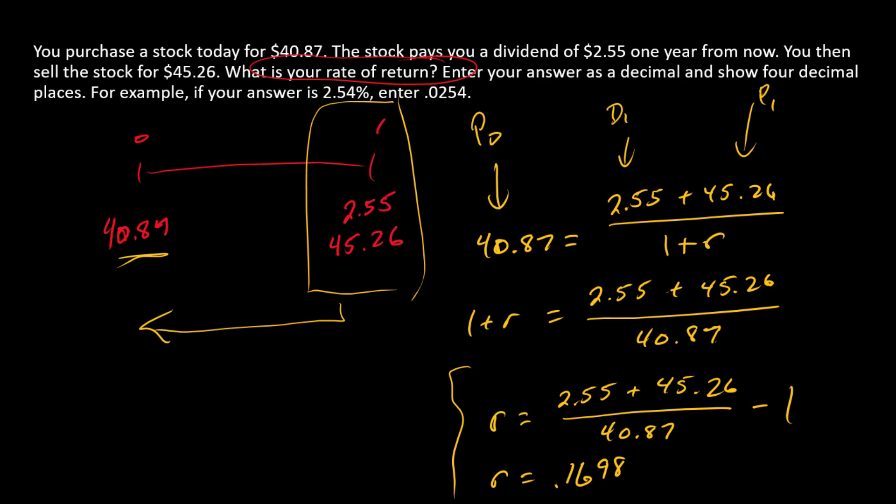We could also write this again, recognizing that we've got D₁ here, P₁, and P₀. We could rewrite all of this algebraically as simply r is D₁ plus P₁ minus P₀, so I'm pulling the one over here into my fraction, and divide that by P₀.